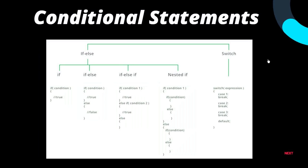Conditional statements are where a condition must be satisfied first before a set of instructions is executed. There are basically two conditions: the if-else condition and the switch condition. The if-else is subdivided into if, else, else-if, and nested if. The switch conditional statement picks one expression from several based on a single condition.